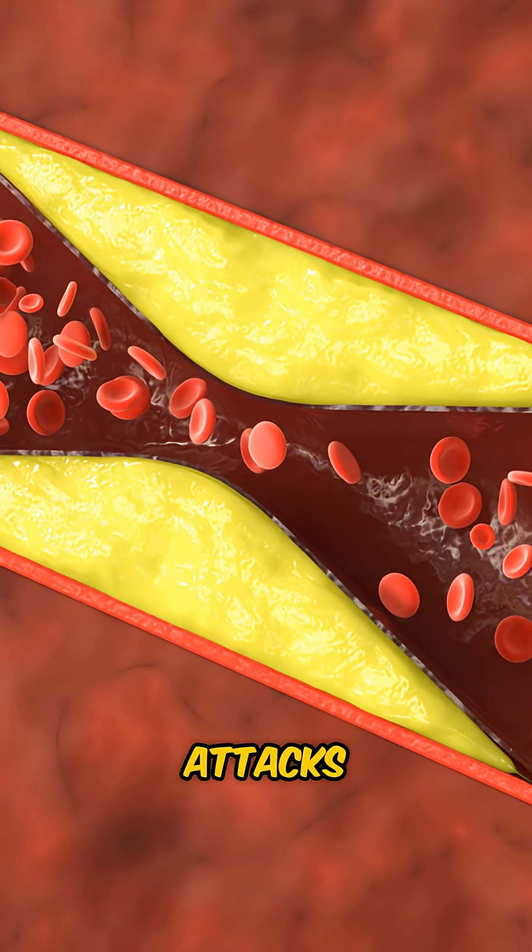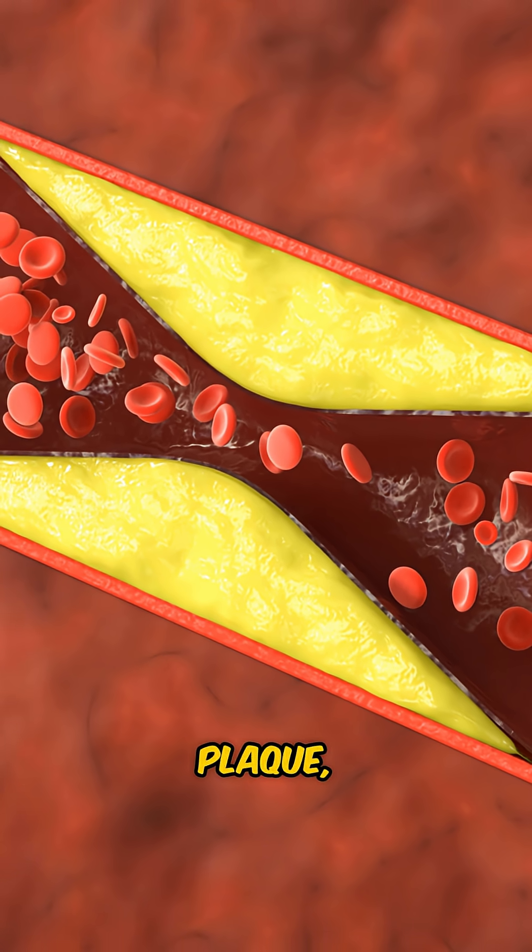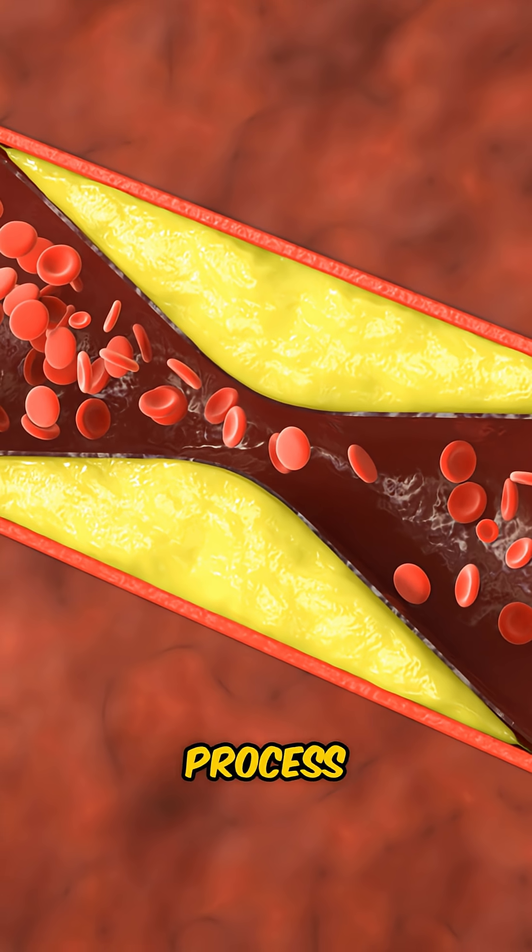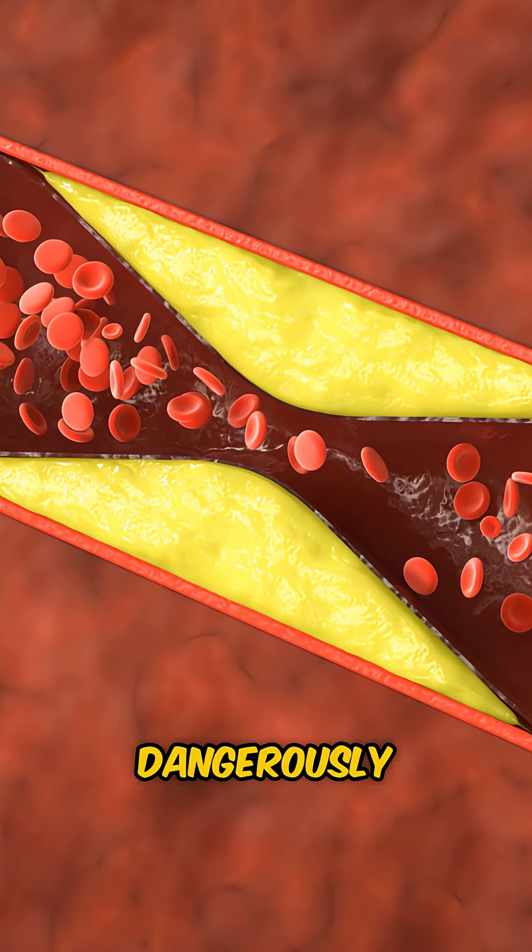Once inside, IMP attacks your artery walls. It sparks inflammation and sticky plaque, clogging your arteries—a process called atherosclerosis, which means your blood vessels get dangerously narrow.